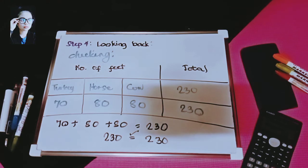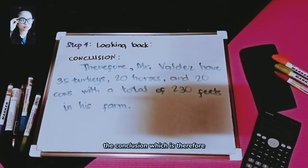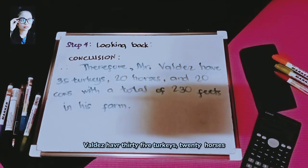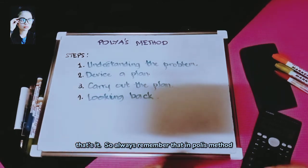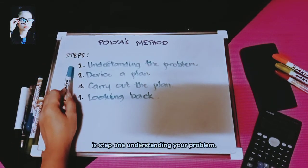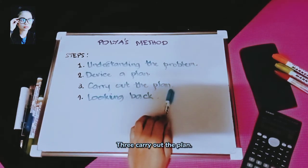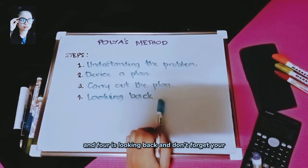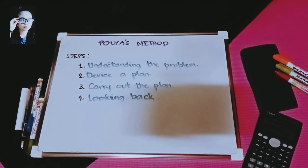In conclusion, using Polya's method: therefore, Mr. Valdez has 35 turkeys, 20 horses, and 20 cows, with a total of 230 feet on his farm. Always remember Polya's four steps: step one — understand the problem; step two — devise a plan; step three — carry out the plan; step four — look back. Don't forget your conclusion. That's all for today, hope you enjoyed!